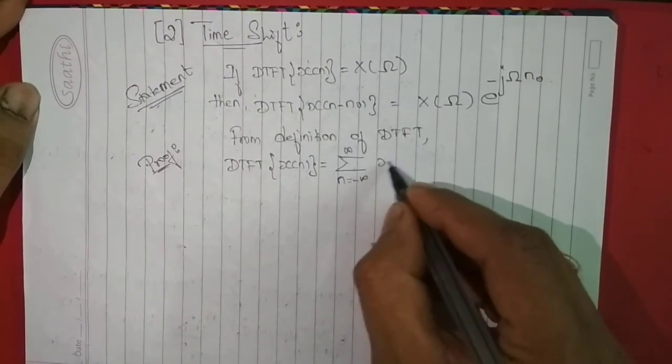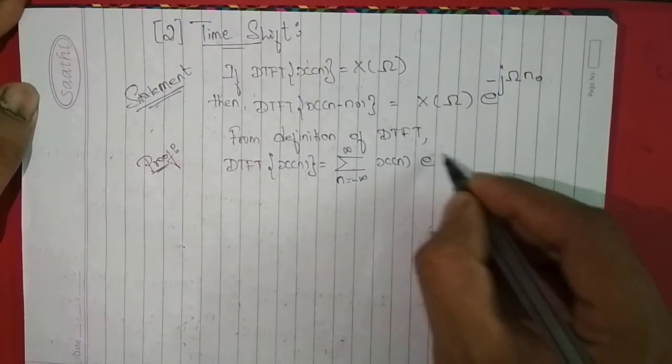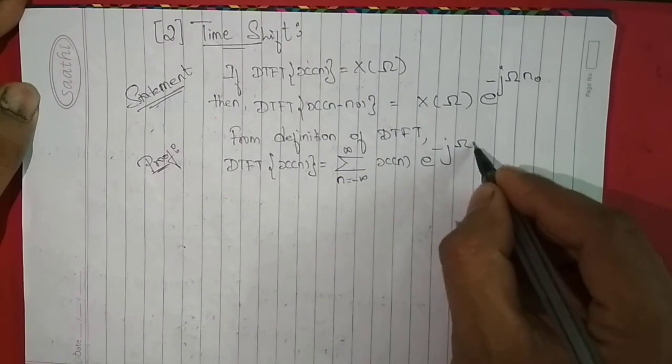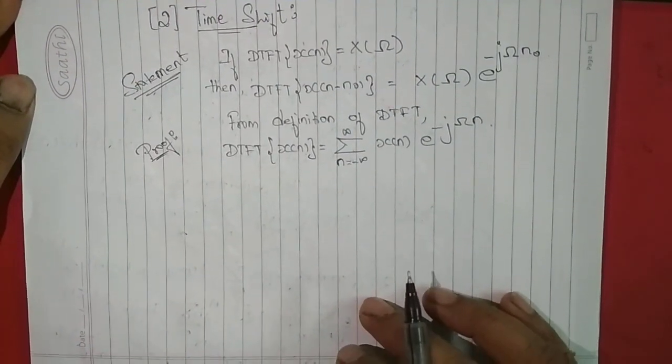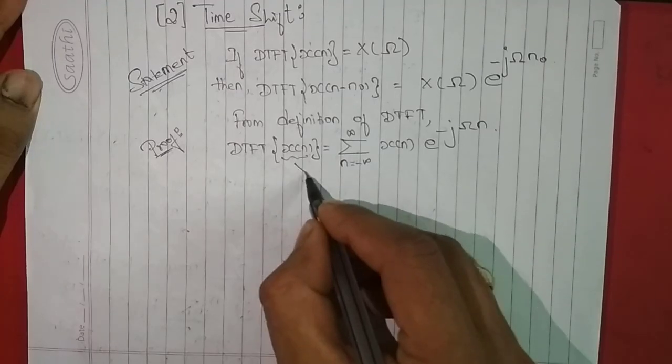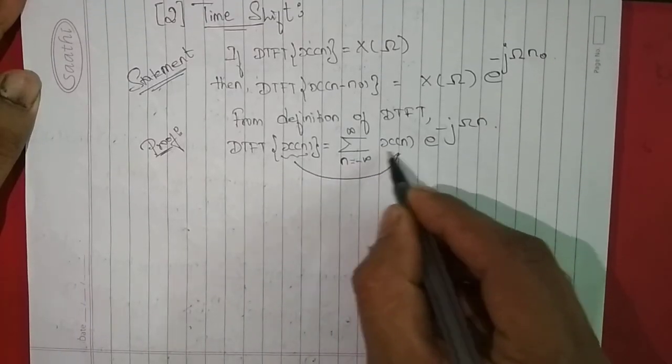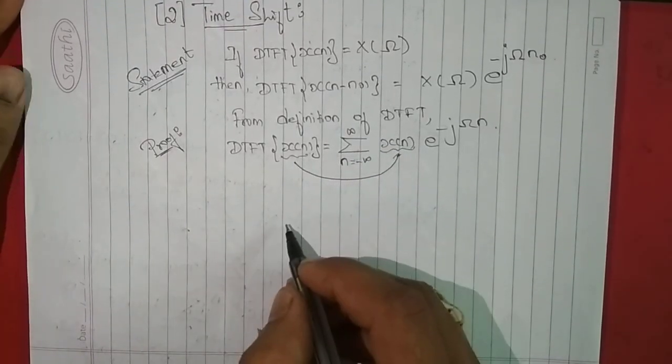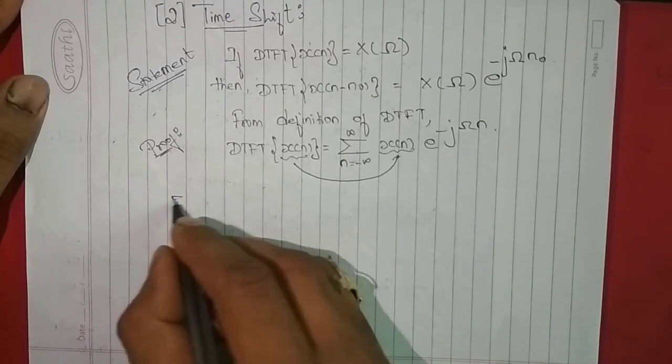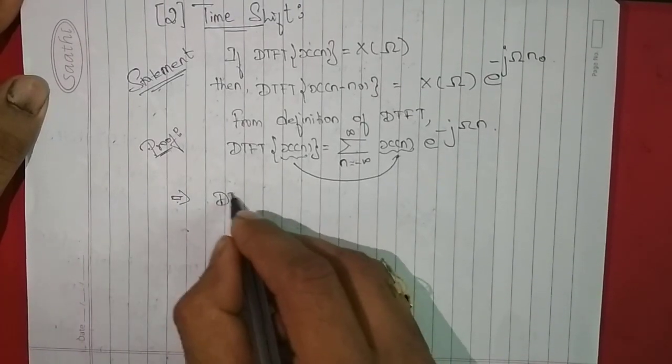ranging from minus infinity to infinity, x(n)e^(-jωn). Whatever we have in the curly bracket has to be put between summation and exponential. So therefore, DTFT